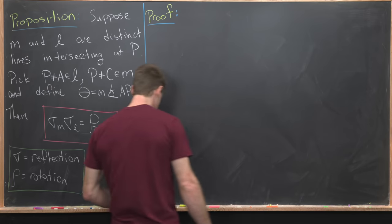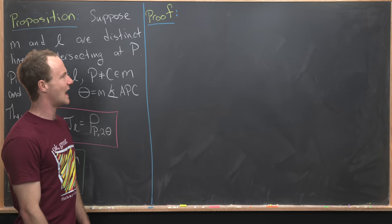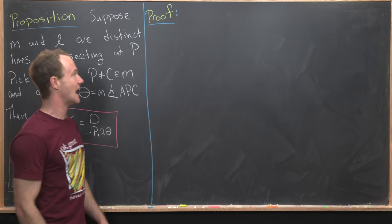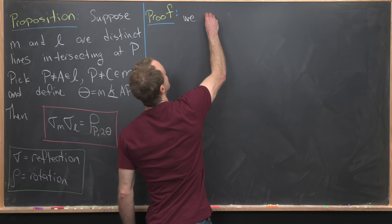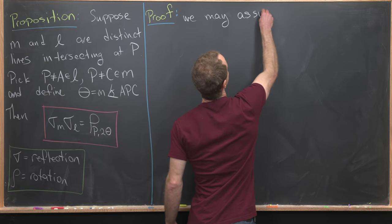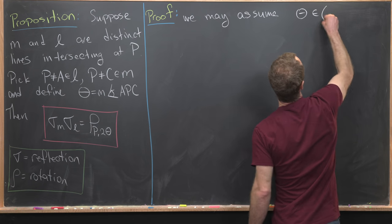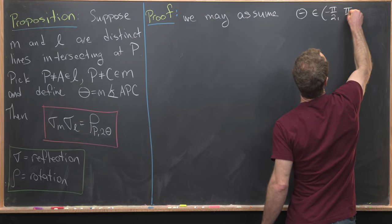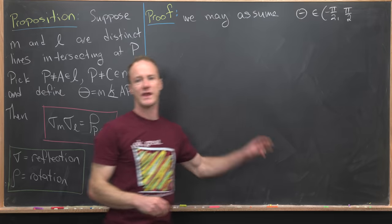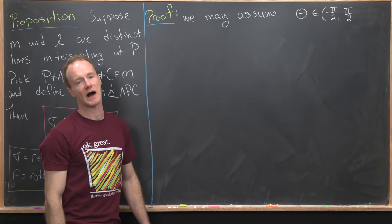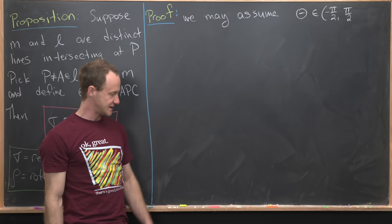Let's get into the proof. First of all, by just relabeling M and L, we may assume that our angle theta is on the interval minus pi over two to pi over two, where we do not include minus pi over two, but we do include pi over two.